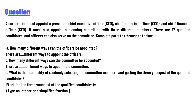Part b: How many different ways can the committee be appointed? Part c: What is the probability of randomly selecting the committee members and getting the three youngest of the qualified candidates? P(getting the three youngest of the qualified candidates) equals — type an integer or a simplified fraction.